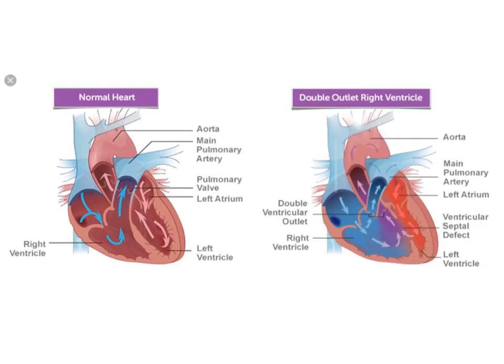I found a nice picture of a normal heart on the left and a double outlet right ventricle on the right. In the normal heart we see the normal blood flow going up the LV outflow tract and out the aorta from the left ventricle, and from the right ventricle up the PA and to the lungs. In a double outlet right ventricle there's a problem with the positioning of these vessels.